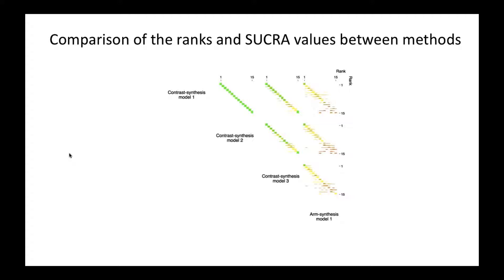These ranks were derived using the SUCRA values. We also created these Bland-Altman plots based on the SUCRA values. These tell a very similar story to what the rank plots show. You have quite good agreement in the ranks between the contrast synthesis models with more variability when you look at the arm synthesis models.